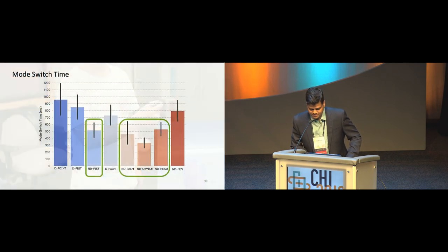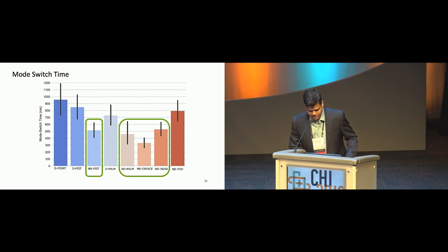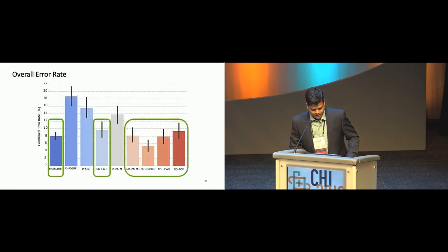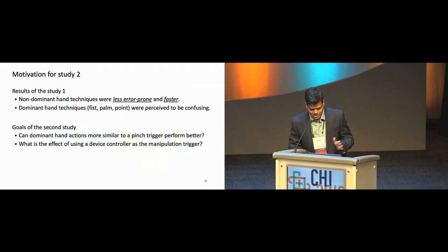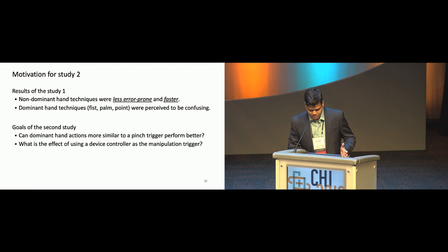Looking at the mode switching time footprint of these eight techniques, dominant hand techniques perform poorly compared to non-dominant hand techniques. Non-dominant techniques, particularly the non-dominant device technique, are the fastest. In terms of overall error rate, non-dominant techniques are comparable to the baseline pinch posture, while dominant hand techniques perform poorly. Participants felt that the dominant techniques - point, fist, and palm - are significantly different from the baseline pinch posture, leading us to suspect that subtle hand postures might reveal different results. To summarize study one: non-dominant hand techniques were less error-prone and faster; dominant hand techniques were perceived to be confusing.